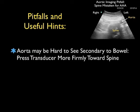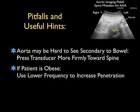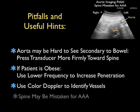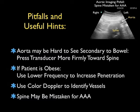Let's go over some pitfalls and useful hints for imaging of the abdominal aorta. At times the aorta may be difficult to see secondary to excess bowel gas — pressing the transducer more firmly towards the spine can displace the bowel gas and improve visualization. If the patient has a high body mass index, we can use a lower frequency to increase penetration. Using color Doppler helps identify vessels, and be careful because there are times where the spine may look like a triple-A — close attention to the spine location and vascular structures anteriorly will clear that up.